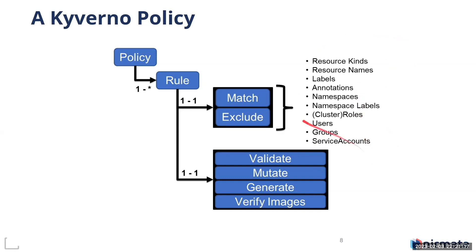Inside of that rule, you also declare what type of behavior you want. If it's validation, you're going to validate a resource — that's the yes or no behavior. If it's a mutate rule, that means you're going to change the resource. If it's a generate, that means you're going to ask Kyverno to create some new resource for you based upon a definition that you provide. And if it's a verify images rule, that means you're going to ask Kyverno to go and check the OCI registry for things like signatures and attestations on an image before it's allowed to be pulled in or admitted into the cluster.